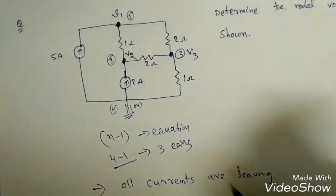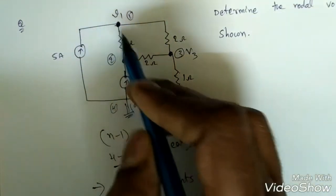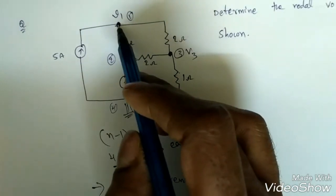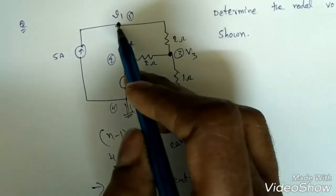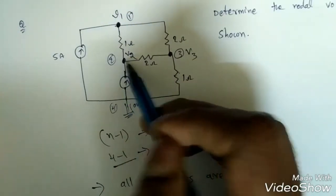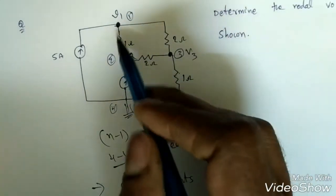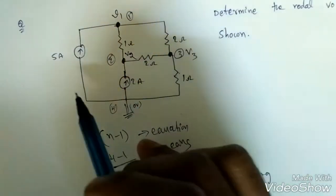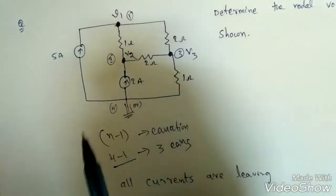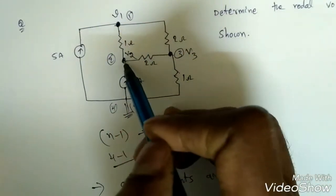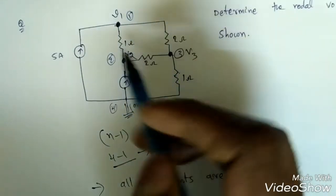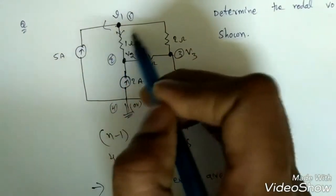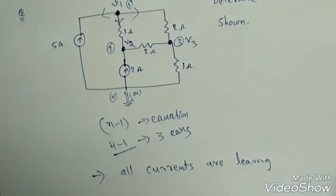When writing the KCL, at each and every node we assume that all currents are leaving. This is our assumption. You can assume all currents are entering instead, but if we assume all currents are leaving, whoever is leaving gets a positive sign and whoever is entering gets a negative sign. We assume all leaving because when this node voltage is higher than the adjacent node voltages, we can easily write the current as V1 minus V2 by 1, V1 minus V3 by 2, etc.